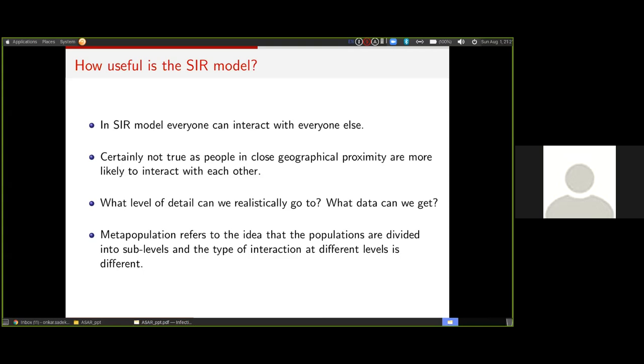For this, again, this is a popular idea in the literature which is called metapopulation. What does metapopulation mean? It means that the population is divided into multiple sub-levels and the interaction at different levels is different. For a country like India, what we did is we assume that there are these cities and they are connected to each other because people travel from one city to another. Within a city, everyone can interact with everyone else, while a small fraction of the city's population can take either road, rail, or air transport and move from one city to another.